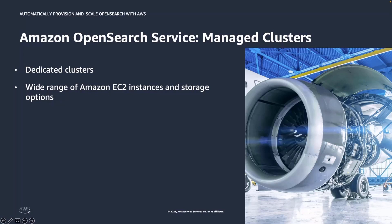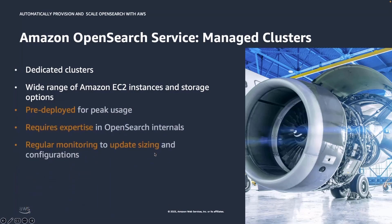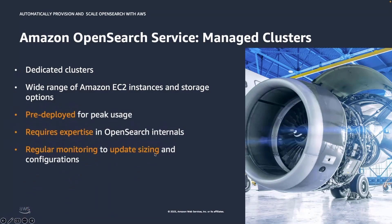But what are the challenges with the provisioned option? First, you need to pre-deploy for peak usage and make sure you have sufficient capacity to meet your cost and availability goals. Second, it requires expertise to use Amazon OpenSearch Service — understanding how the sharding mechanism works and the indexing lifecycle — to make sure the domain is performant and optimized for your workload.